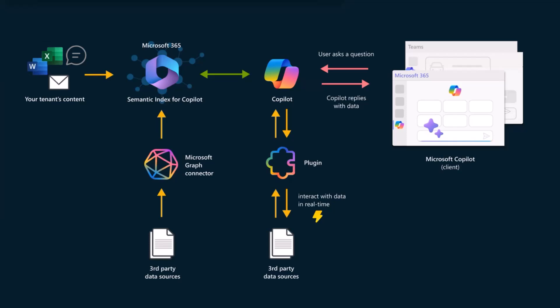One is graph connectors. Waldeck demoed these a couple of weeks ago, and Aicha also did a Python example last week. The idea is to just add your content into that semantic index, so everything is brought right into the semantic index. From a Copilot perspective it works the same as if you had a bunch of Word documents inside of your content. That's really nice in scenarios where you don't necessarily have a lot of real-time updates, because it takes a little while for that stuff to get indexed.